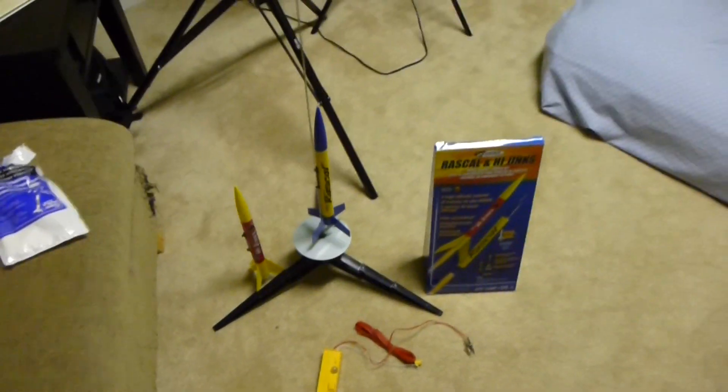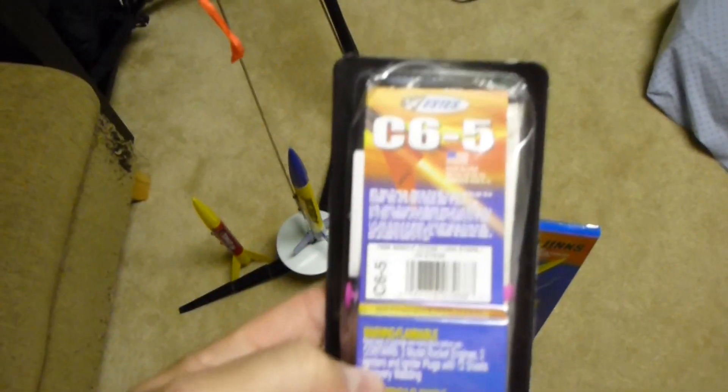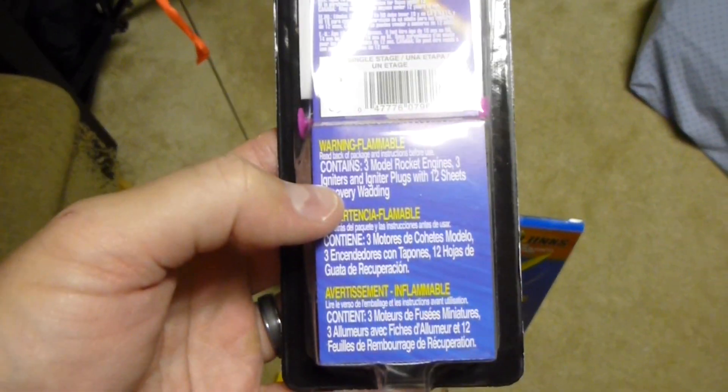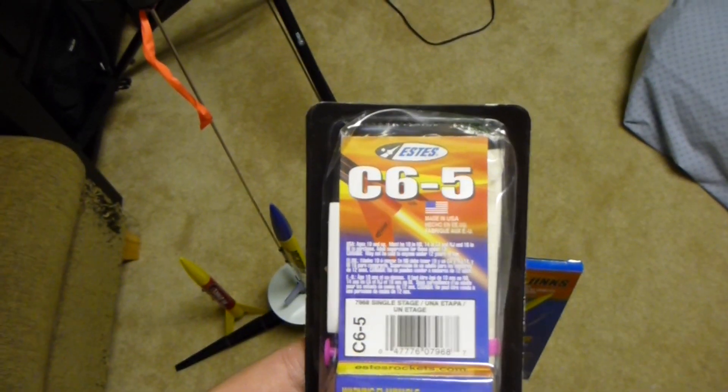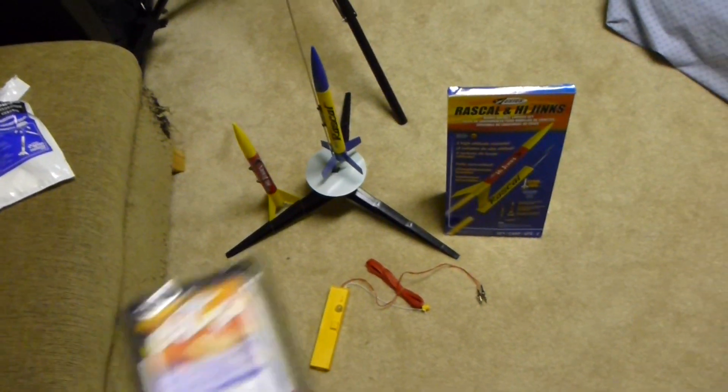And it also doesn't come with rocket motors. Now since I'm going for a high altitude flight, I've got these right here, C6-5s. And this is the biggest motor that these two rockets will accommodate. Should be a lot of fun.